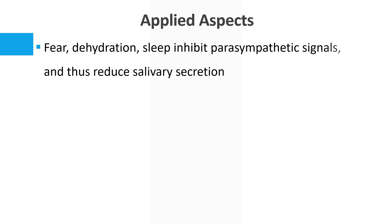Some applied aspects: fear, dehydration, and sleep can inhibit the parasympathetic signals and thereby reduce salivary secretion. That concludes this overview of the regulation of salivary secretion. Thank you.